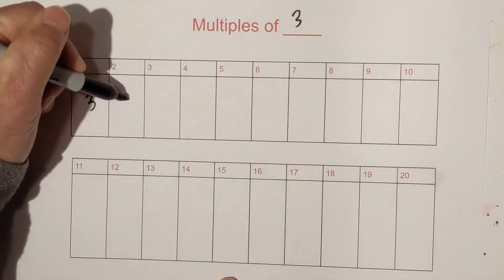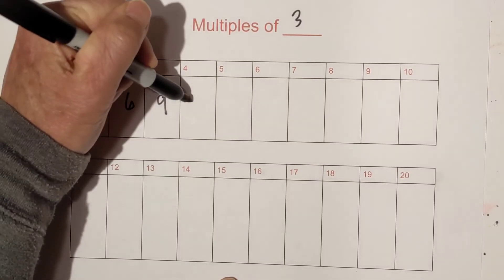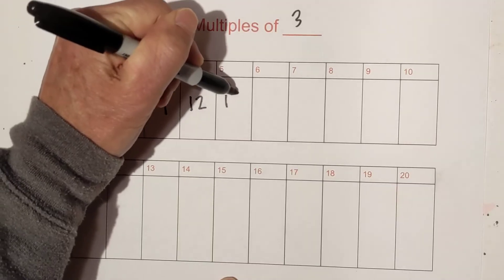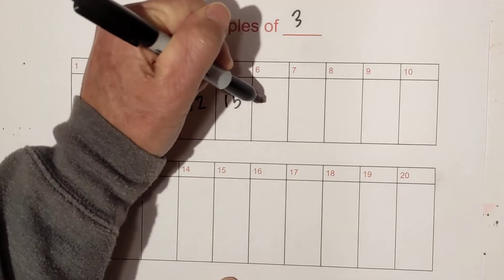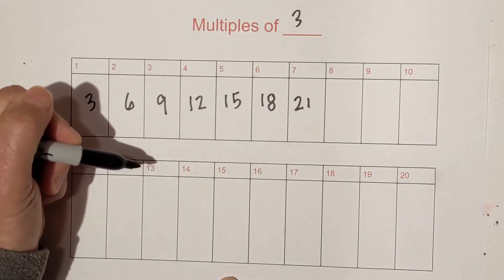So we have 3, 6, 3 times 3 is 9, then we have 12, 5 times 3 is 15, then we have 18, then we have 21, 7 times 3 is 21.